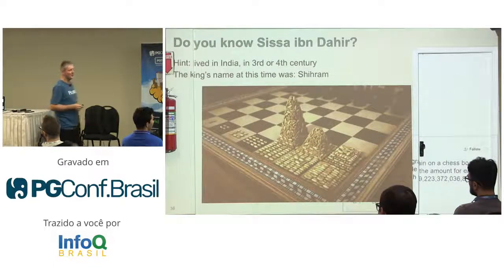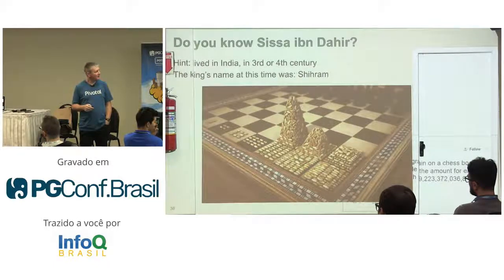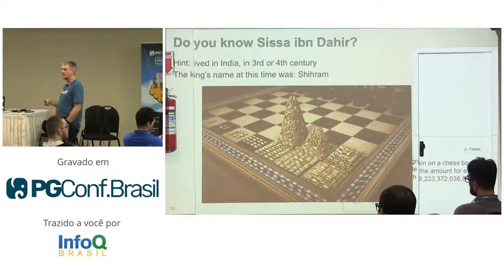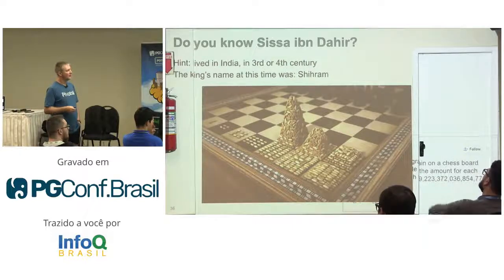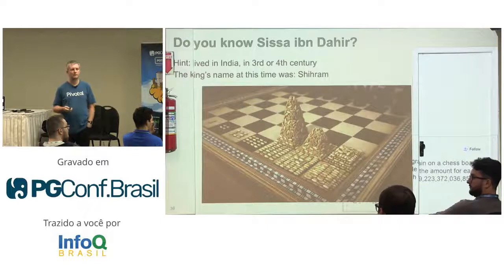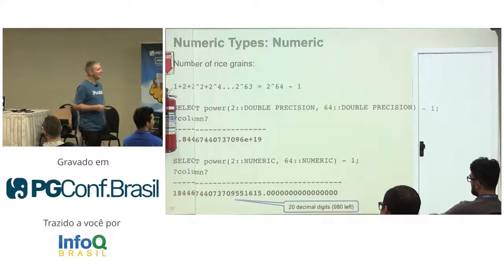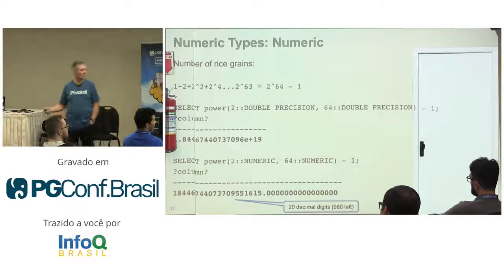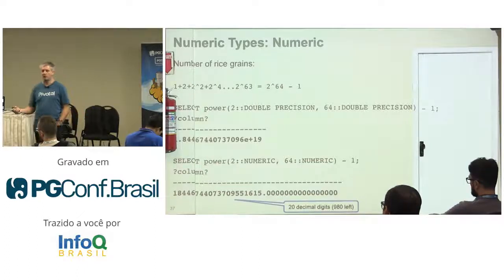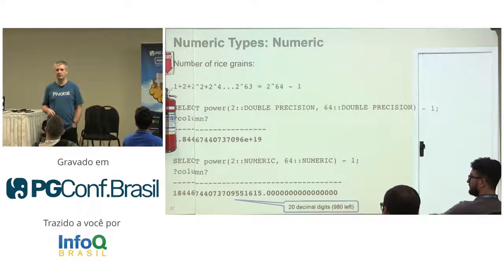Here's a classic example: a man asks to receive one rice grain on the first chessboard field and then double the number for every subsequent field. The total number of rice grains is 2 to the power of 64 minus 1. If we try to store this in double precision — the biggest floating point type we have — it becomes a very imprecise number and we can't really figure out how many rice grains we're talking about. But we can easily store it in a numeric data type. It's only about 20 digits, and we still have 980 more to spare.